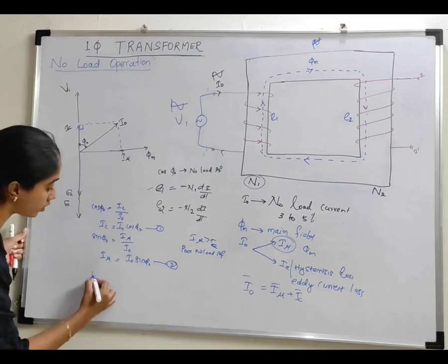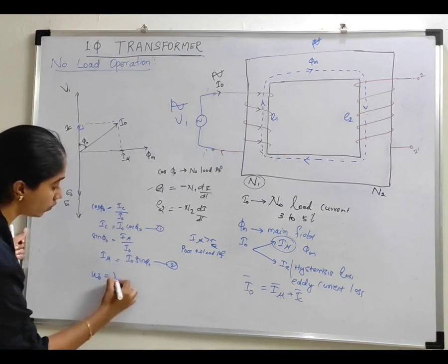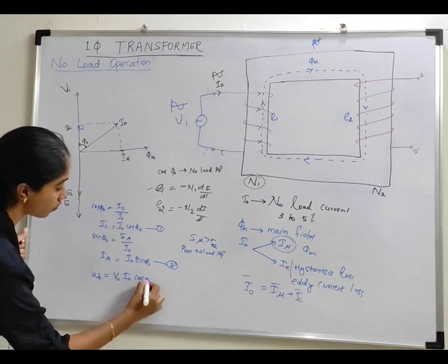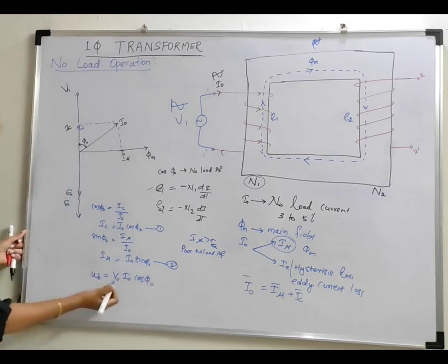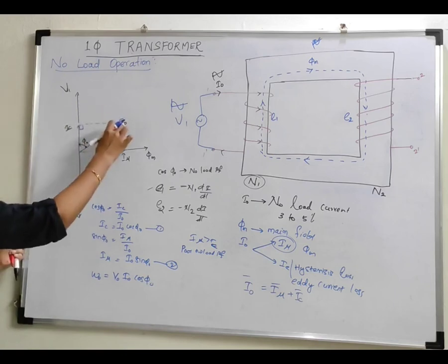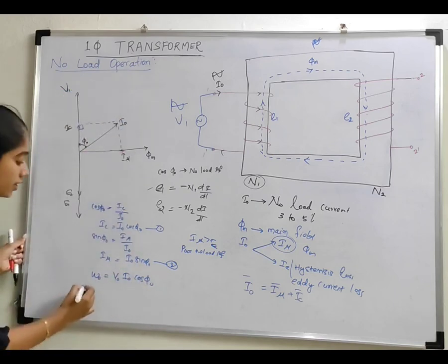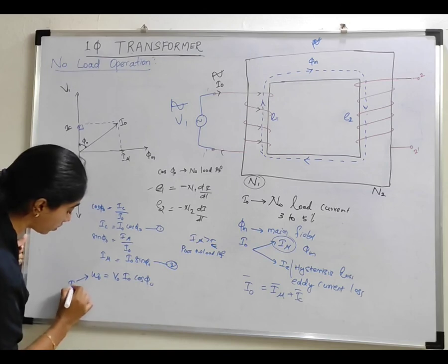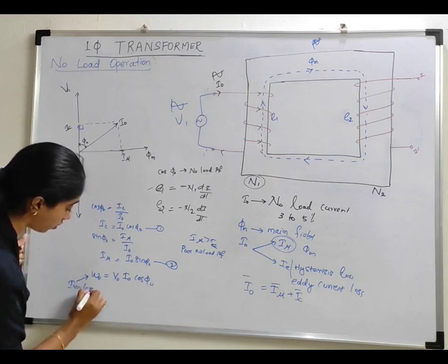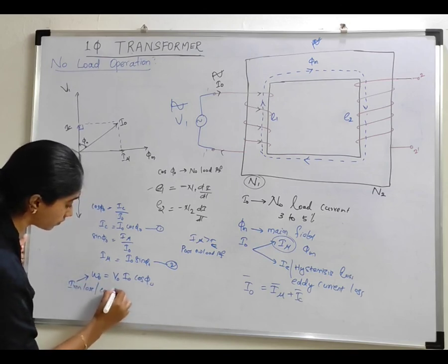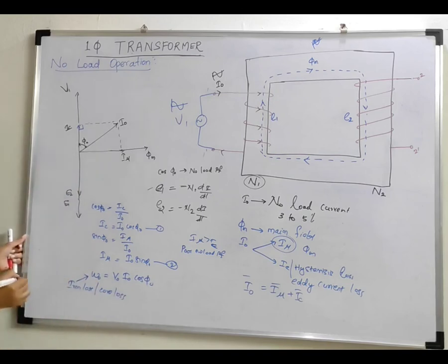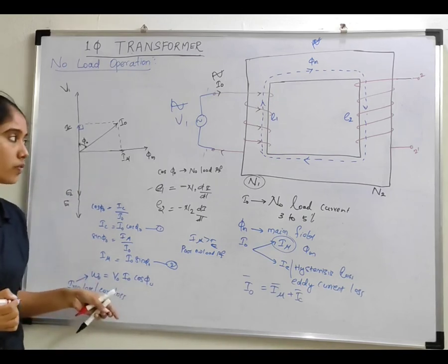The core loss W0 is equal to V0 · I0 · cos φ0 — that is, the no-load voltage, the no-load current, and the cosine of the angle between them. This is called iron loss or core loss. This is all about the no-load operation of a single-phase transformer.